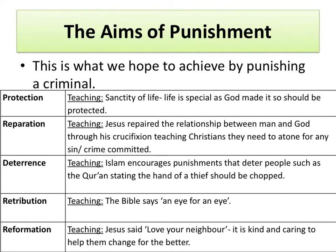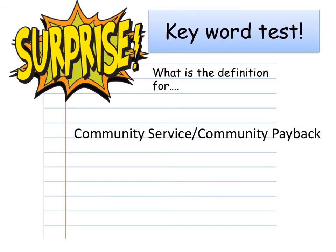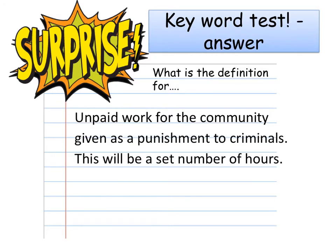For retribution — the idea of getting revenge — the Bible says an eye for an eye. And finally for reformation — changing a person for the better — Jesus said love your neighbour, and it's a kind and caring thing to help somebody change for the better so that they can be part of normal society again. Time for another keyword test: what is the definition for community service or community payback? Community service is unpaid work for the community given as a punishment to criminals, for a set number of hours.